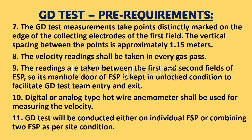Point 7: the GD test measurement points are distinctly marked on the edge of the collecting electrodes of the first field. The vertical spacing between the points is approximately 1.15 meters. Point 8: velocity readings shall be taken in every gas pass.